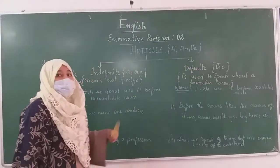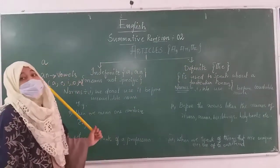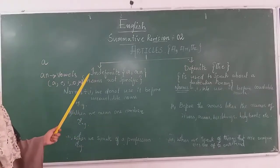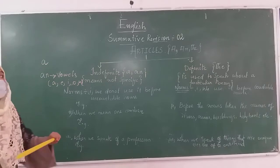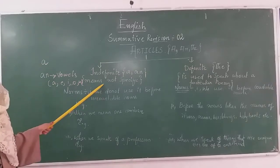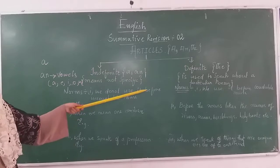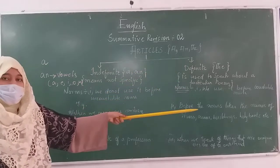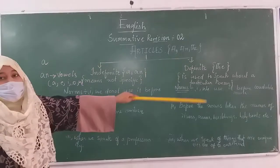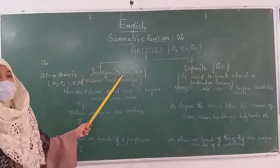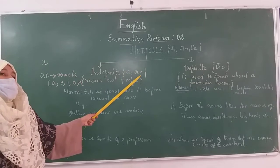There are some rules to be followed to use the indefinite and definite articles. The indefinite article means it does not refer to any specific thing, whereas the definite article refers to a particular thing. Indefinite articles are A and AN, and the definite article is THE.